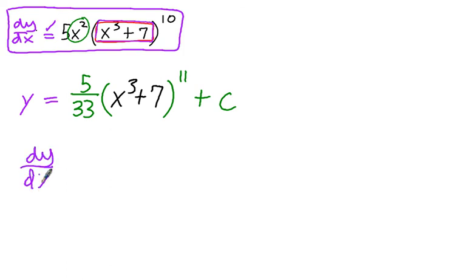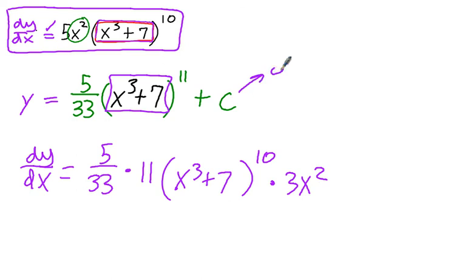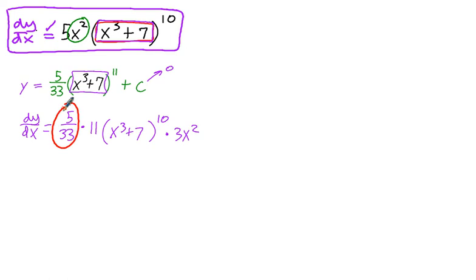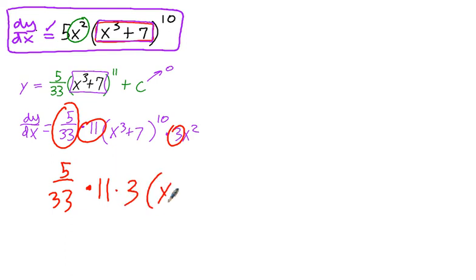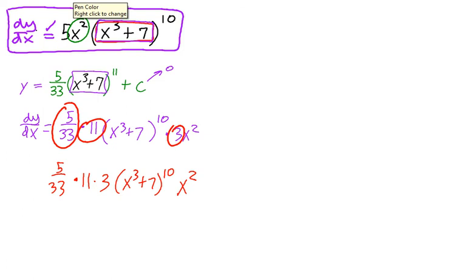Basic derivative rules and the chain rule coming into play. Constant multiple rule: keep the constant and multiply by the derivative. Some expression to the power of 11 becomes 11 times the expression to the tenth. Bring down the expression and multiply by the derivative of the expression, 3x squared. The constant term has a derivative of zero. Now let's bring together all the constants: 5 over 33 times 11 times 3. Combining the constants: 11 times 3 is 33, divide out 33, you get 1. That leaves us with 5 times this expression to the tenth power times x squared.